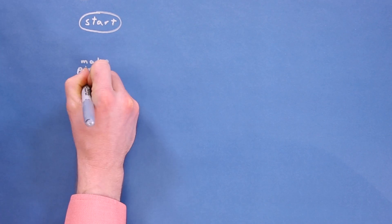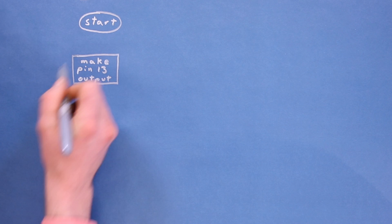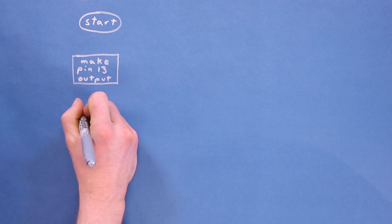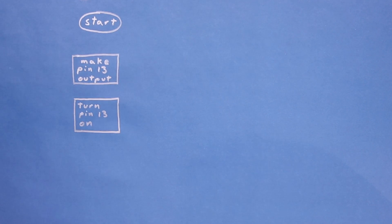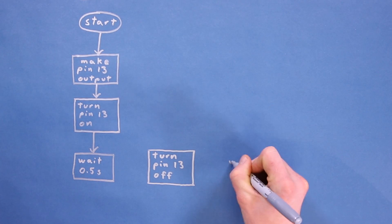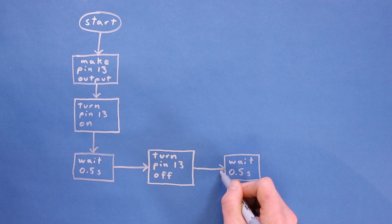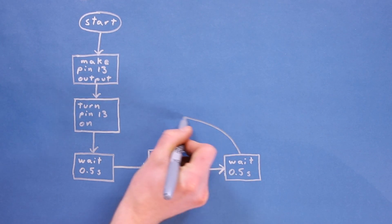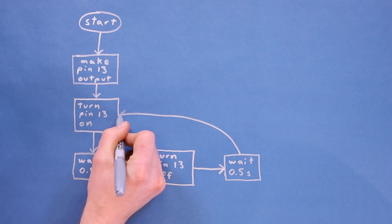We then need to tell the Arduino that we want to use the LED pin, pin 13 in this case, as an output. After that, we want to turn the LED on, wait one half of a second, turn the LED off, and wait another half a second. After waiting for the last 0.5 seconds, the program should return to the point where it turned the LED on.